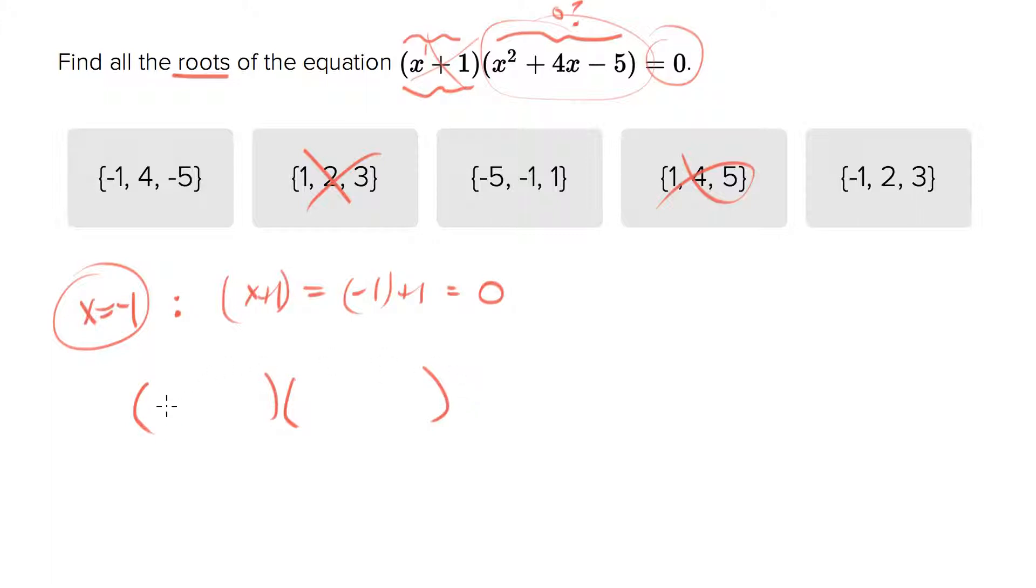Since the first term is x squared, we know we'll be multiplying x by x at some point. We really need to just find the two values that fill out the rest of these binomials. We're looking for two numbers that multiply together to give you the numerical only term and they need to add together to give you the coefficient on the x term.